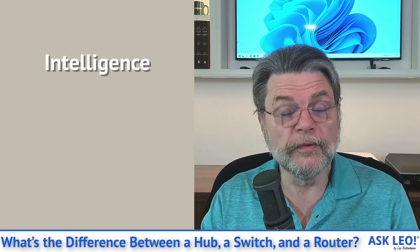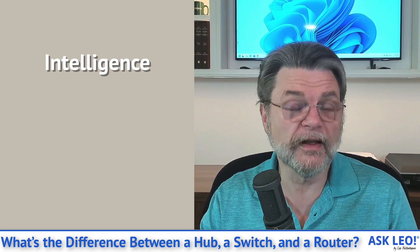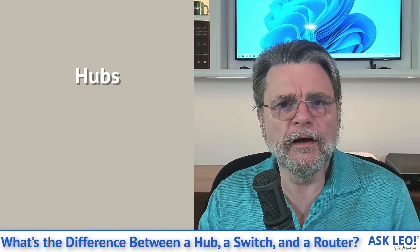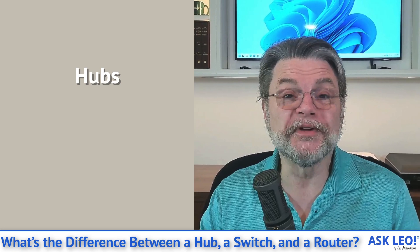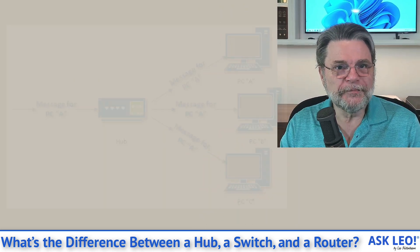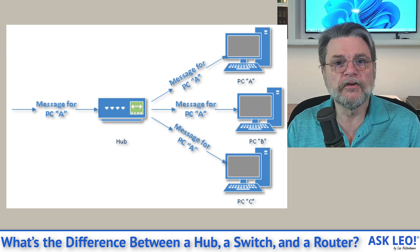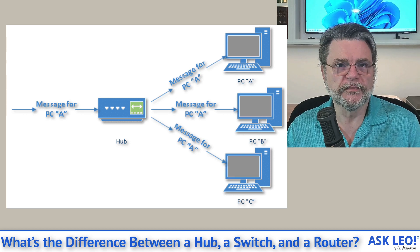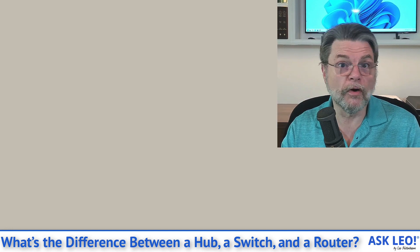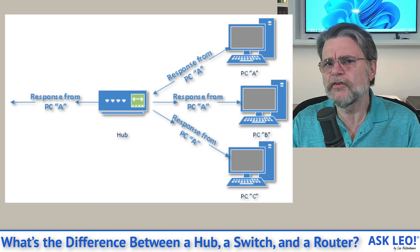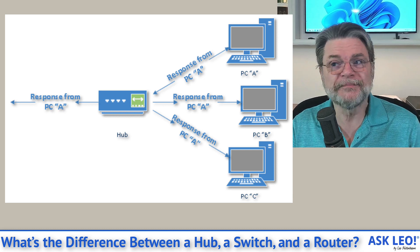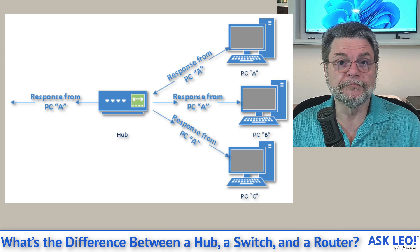The biggest single difference between the three devices is what I'll refer to as intelligence. They are increasingly smart devices. A hub is essentially a very, very stupid device. Basically, what it does is anything that comes in on one of its connections is immediately transmitted to the other connections, all of them. There's no intelligence. It's not trying to figure out what's where. It simply says, if I get it, I got to send it to everybody. That really is the rule of thumb for a hub.